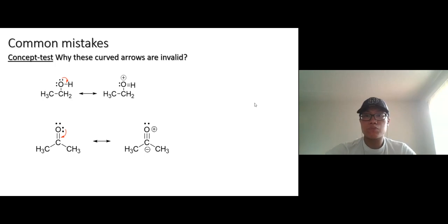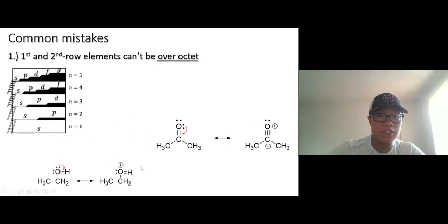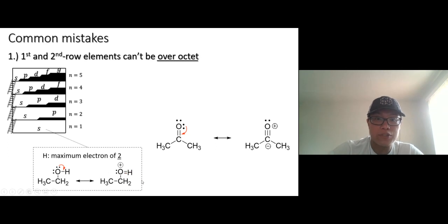First, why this guy's wrong. When you move this lone pair to form a double bond here, what happens? This hydrogen's gonna have four electrons. Can a hydrogen atom contain four electrons? No. Hydrogen atom is in the first period in the periodic table—hydrogen and helium. These two elements have only an s orbital, and an s orbital can hold two electrons. You can't make it four electrons like that.